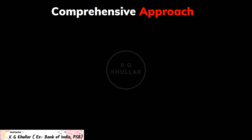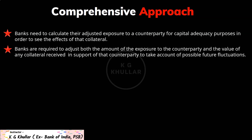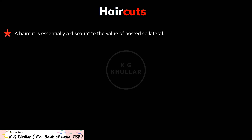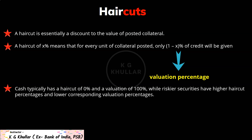In our levels we have to primarily deal with the comprehensive approach. In the comprehensive approach, when taking collateral, the bank needs to calculate its adjusted exposure to a counterparty for capital adequacy purposes in order to see the effects of that collateral. Banks are required to adjust both the amount of exposure to the counterparty and the value of any collateral received to account for possible future fluctuations. These adjustments are nothing but haircuts. A haircut is essentially a discount to the value of posted collateral. A haircut of X% means that for every unit of collateral posted, only 1 minus X% of credit will be given. This credit is also referred to as the valuation percentage. Cash typically has a haircut of 0% and a valuation of 100%, while riskier securities have higher haircut percentages and lower corresponding valuation percentages.